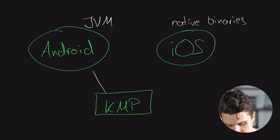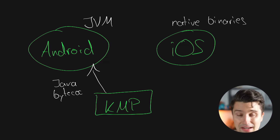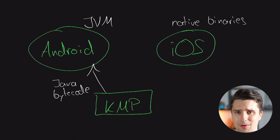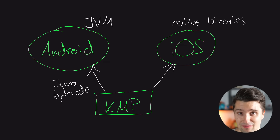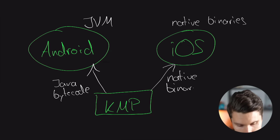When you try to build an executable app from your KMP project, the compiler checks the target. For Android, since it supports the JVM, it takes the shared Kotlin code and compiles it to Java bytecode — the same as a normal native Android app. But when the compiler sees that the developers also want the app to run on iOS, which uses native binaries and not the JVM, it compiles the Kotlin code directly into the specific native binaries that iOS needs. This means our app is still running natively on every single platform.